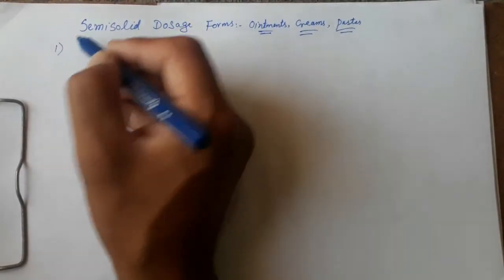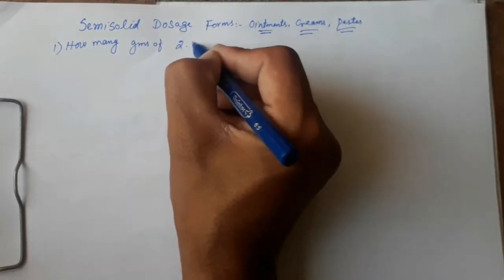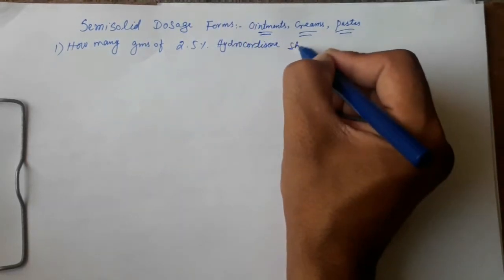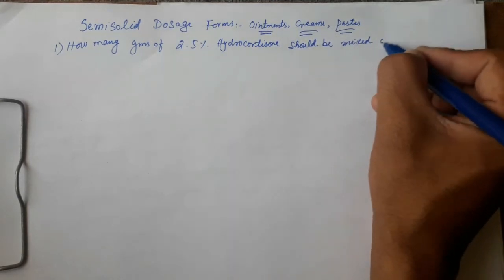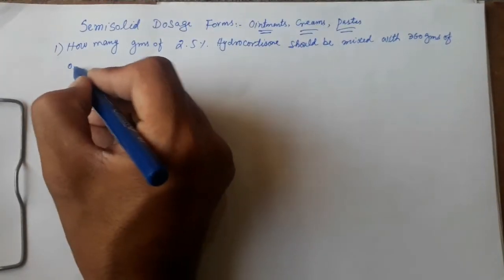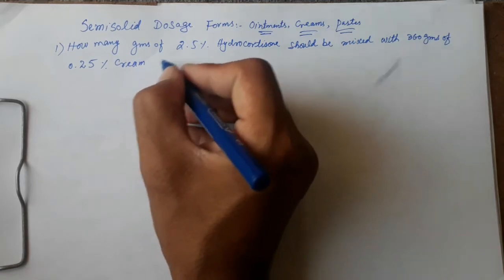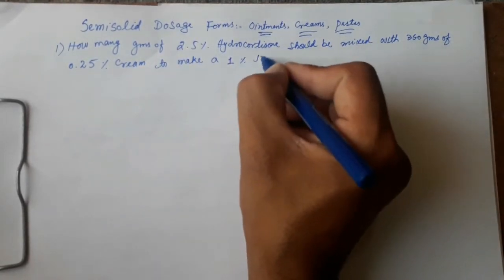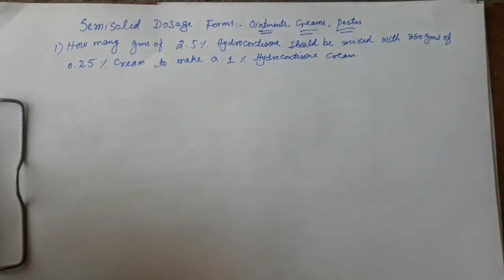Now we will solve different problems regarding semi-solid dosage form calculations. The first problem is: how many grams of 2.5% hydrocortisone should be mixed with 360 grams of 0.25% cream to make a 1% hydrocortisone cream?